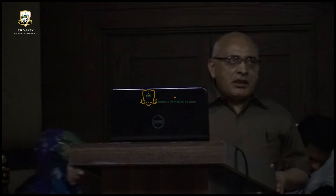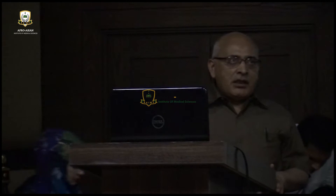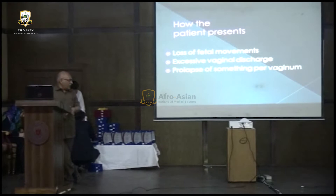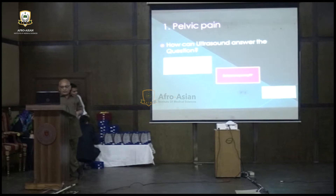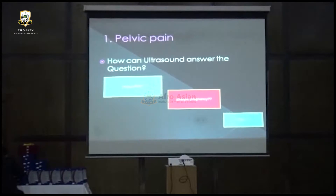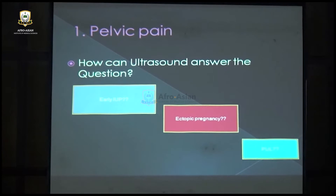Other presenting complaints include loss of fetal movements, excessive vaginal discharge, and sometimes a patient comes with prolapse of something through the vagina. The commonest complaint is pain in the lower abdomen or pelvis. Ultrasound helps diagnose early intrauterine pregnancy, and sometimes the pregnancy is not visible on either transabdominal or transvaginal scan — we call this pregnancy of unknown location.